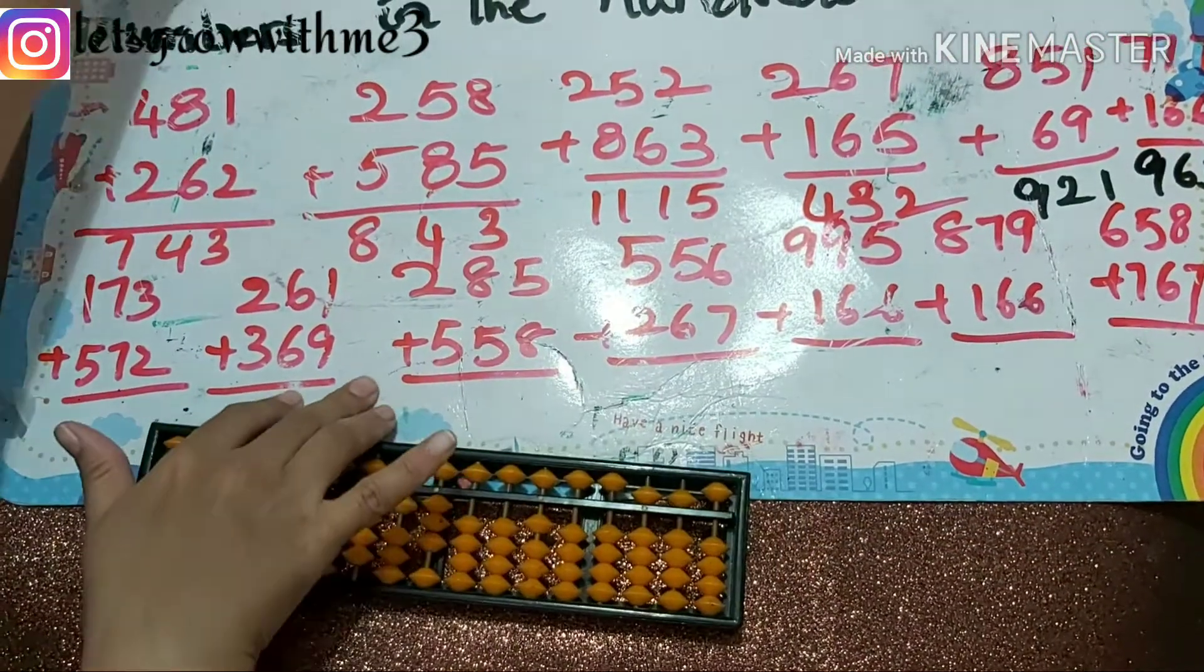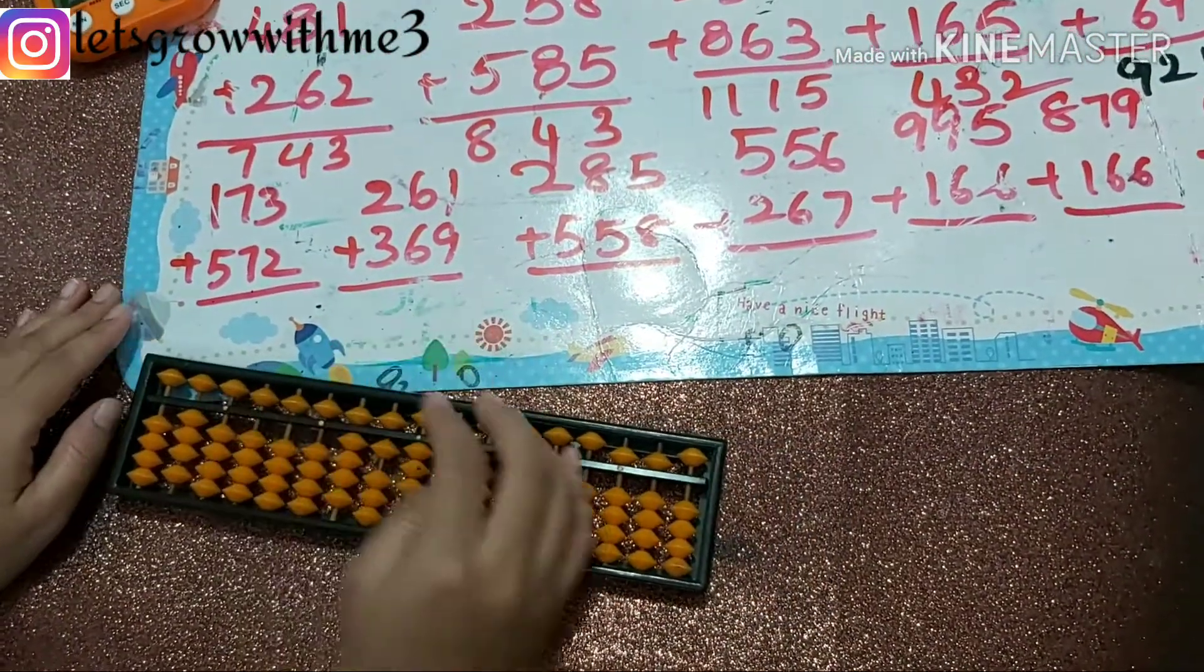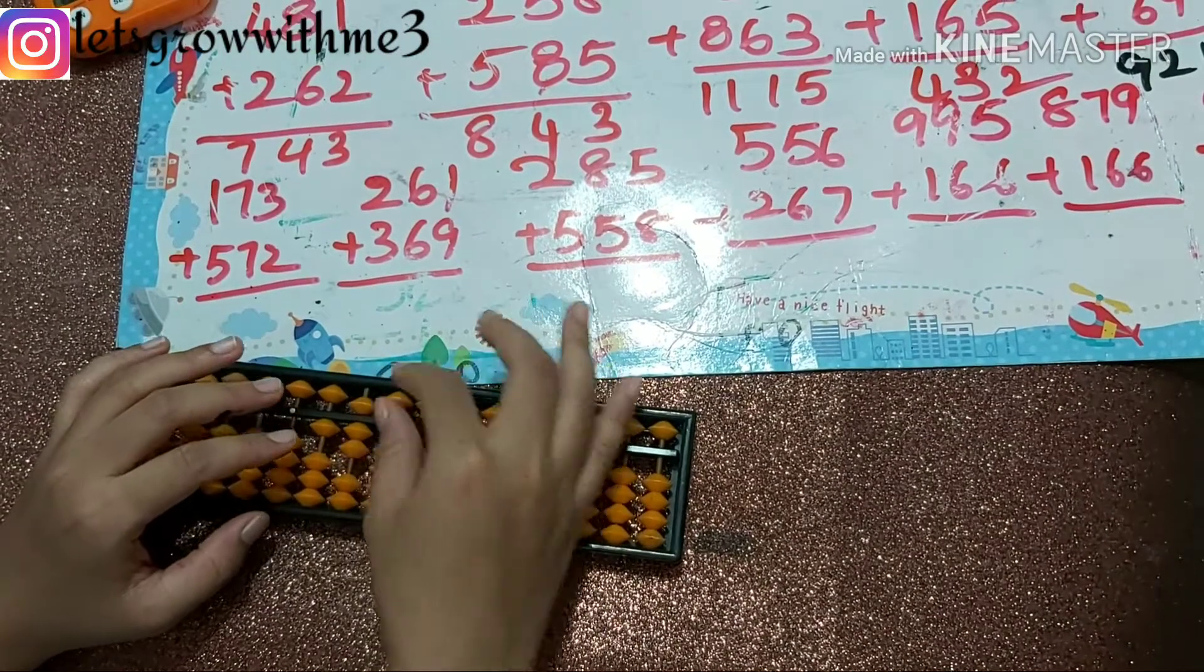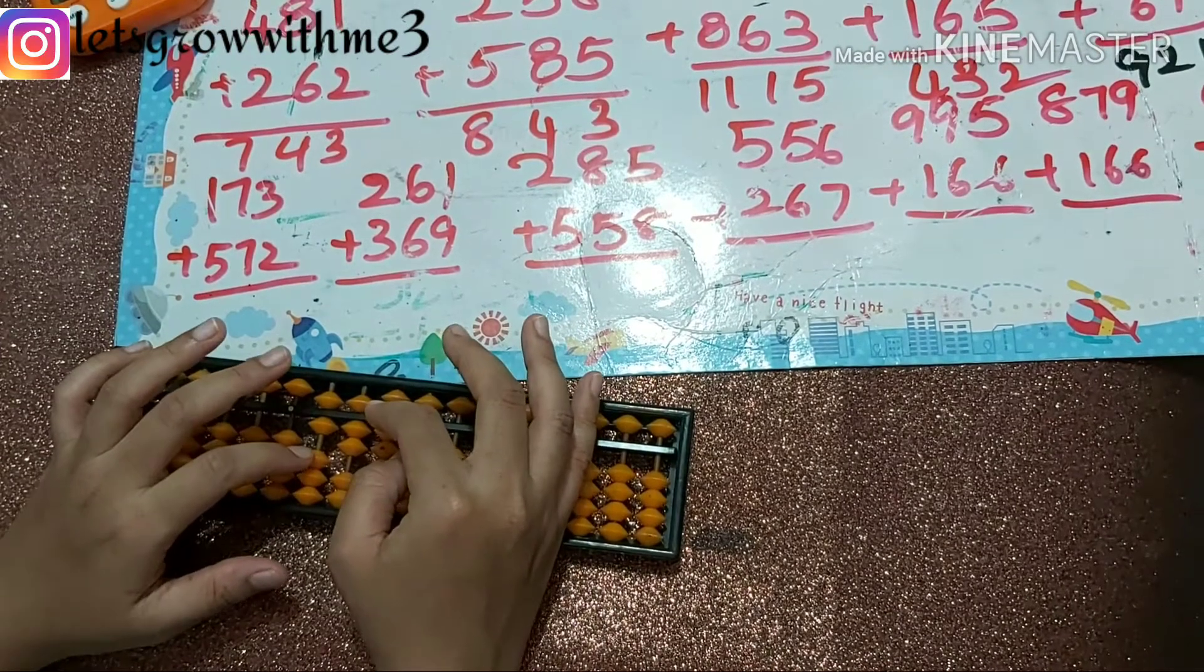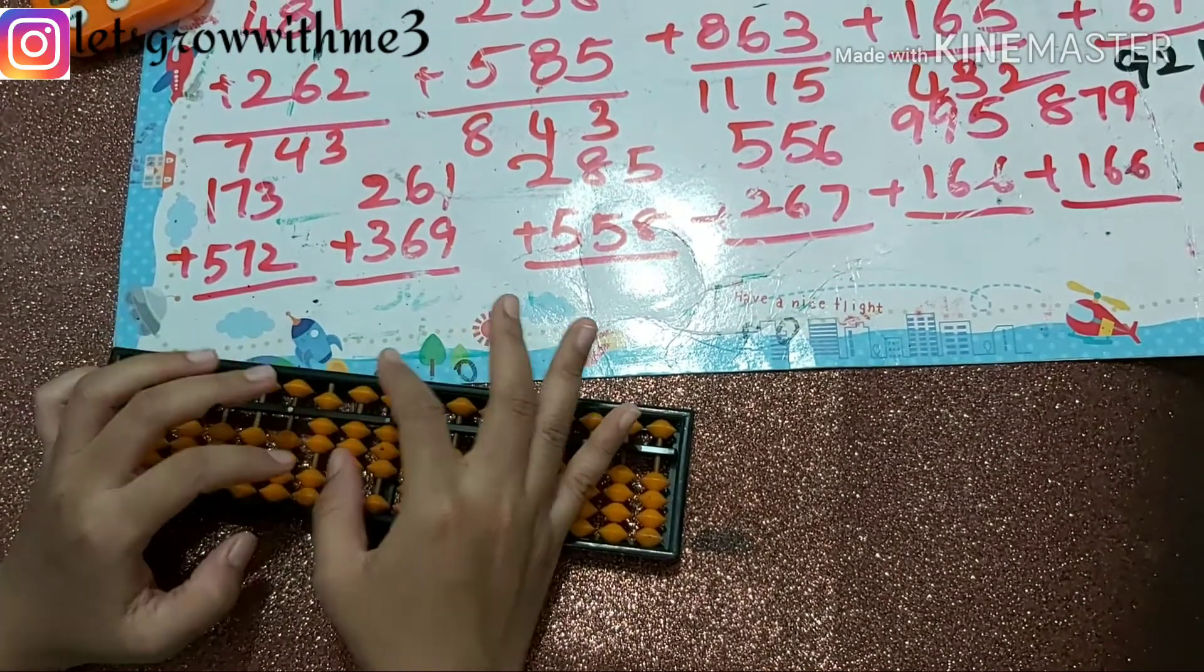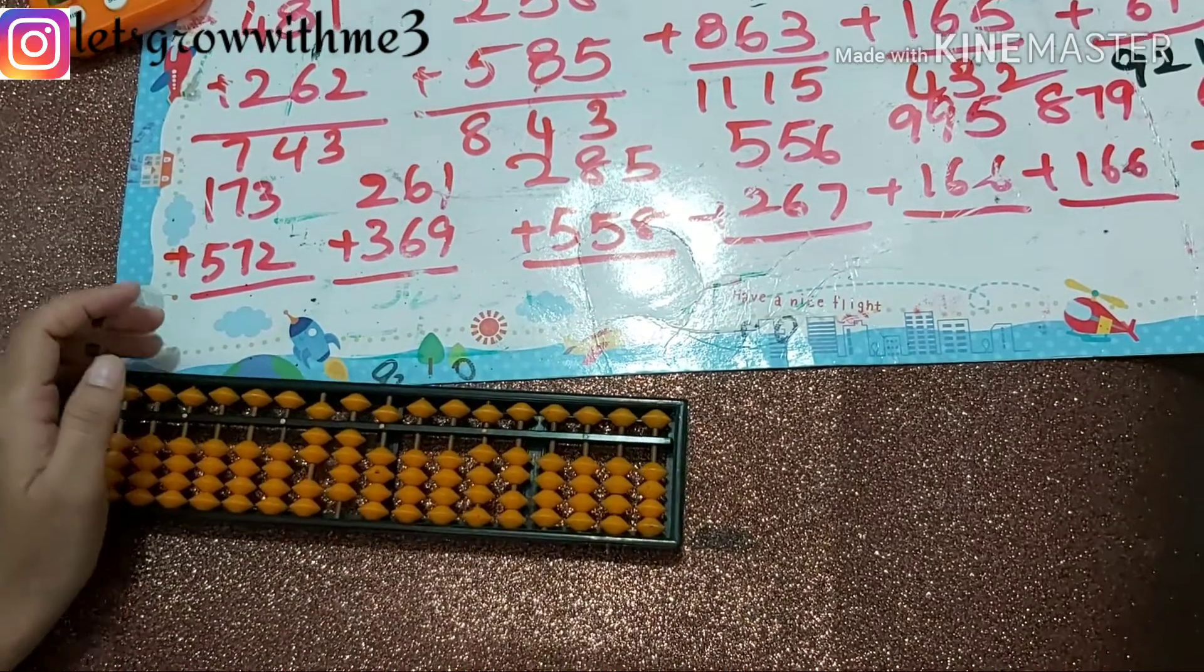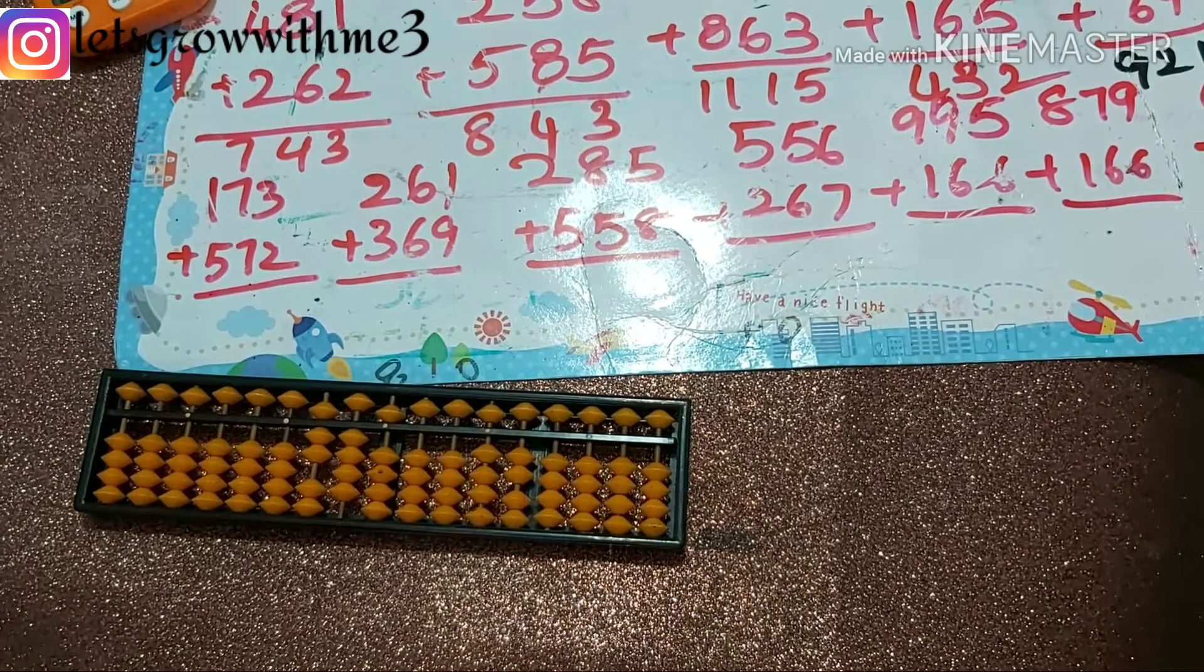Next one: 173 plus 570. Papa, mama, babies up. 2, so how to add here 2? Plus 5 minus 3. So answer is 743.